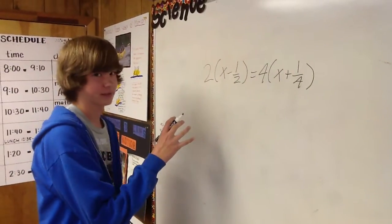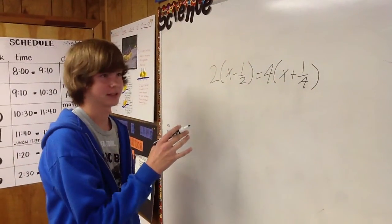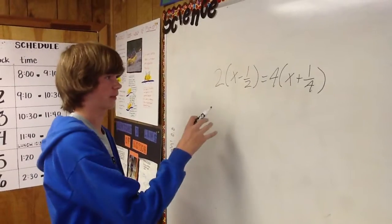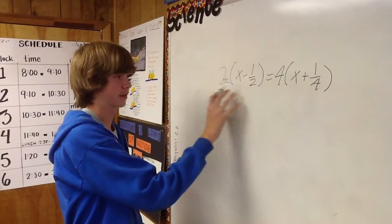Because my problem has parentheses involved, it's the distributive property, so you have to multiply everything inside the parentheses by the number outside.